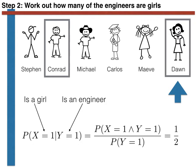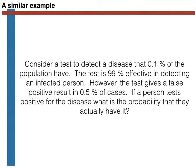Now that we understand our approach with a simple example, let's look at the general insight and use it to answer a more complex question. Consider a test to detect a disease that 0.1% of the population have. The test is 99% effective in detecting a diseased person. However, the test gives a false positive result in 0.5% of cases. If a person tests positive, what is the probability that they actually have it? If you received this positive result, you'd be worried — the 99% effectiveness screams out at you. But you probably should be thinking it's just a false positive, as that is the far more likely explanation.